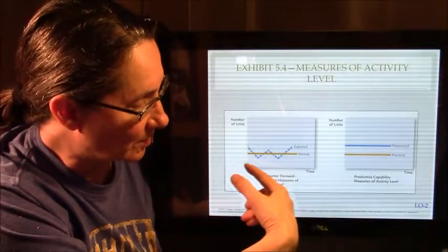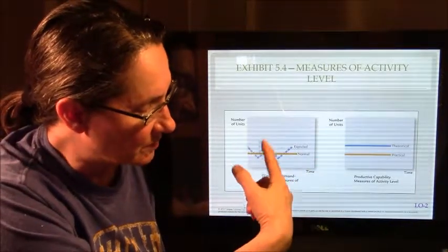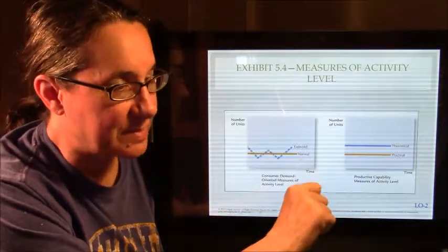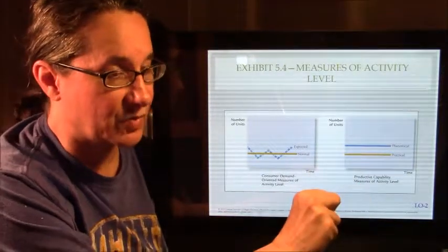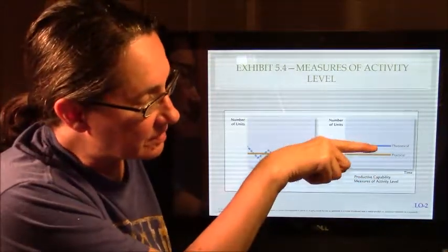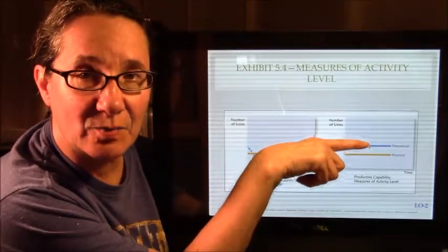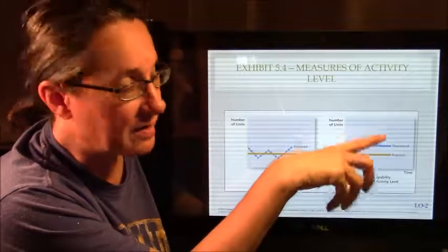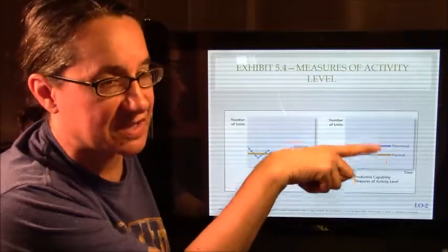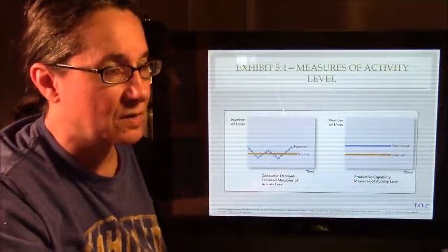You can see that normal is going to be an average, whereas expected is going to go up and down based on what customers do. Theoretical is going to be your absolute highest rate, it's like we run the machine full on, all the time, no breaks, can't really do that. How much could you really run that machine? That's theoretical.